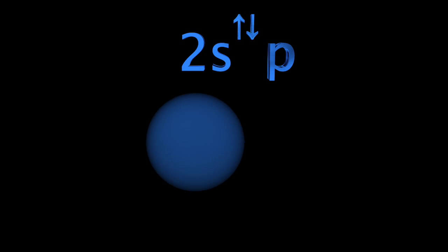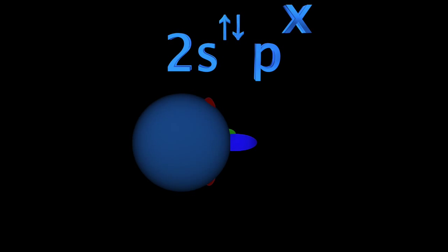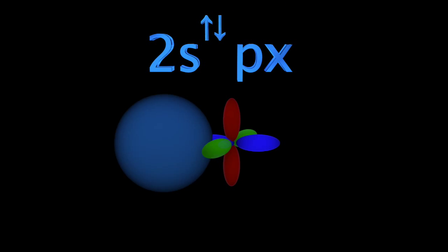The electrons who participate in hybridization are those in level 2: two electrons in sublevel S and two electrons in sublevel P.